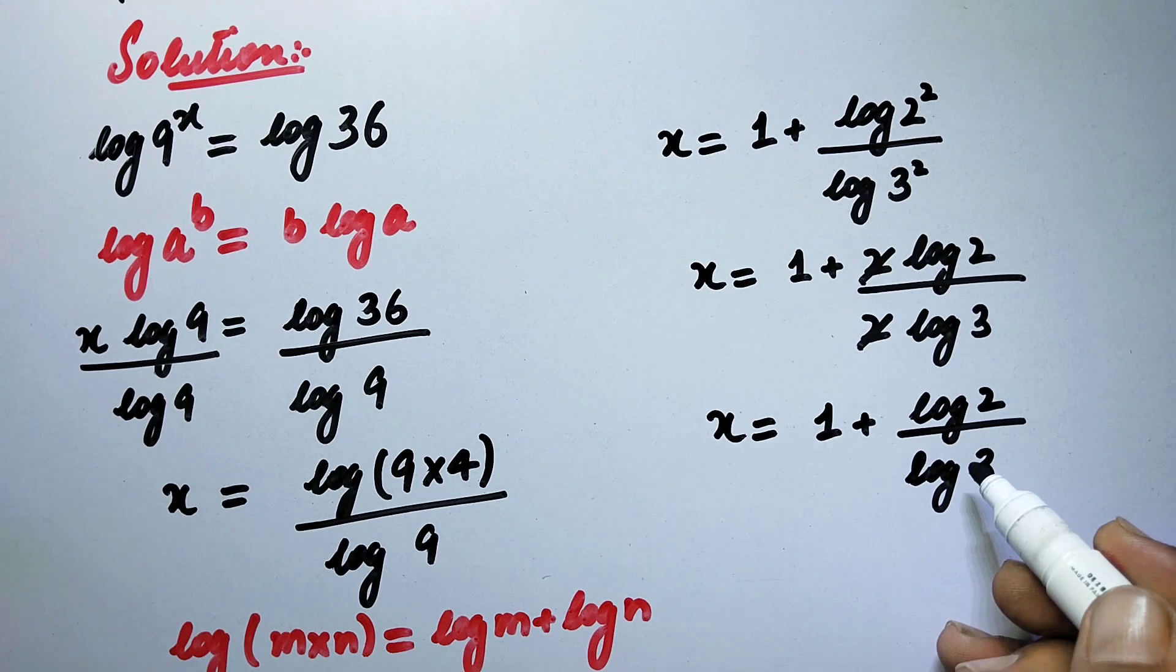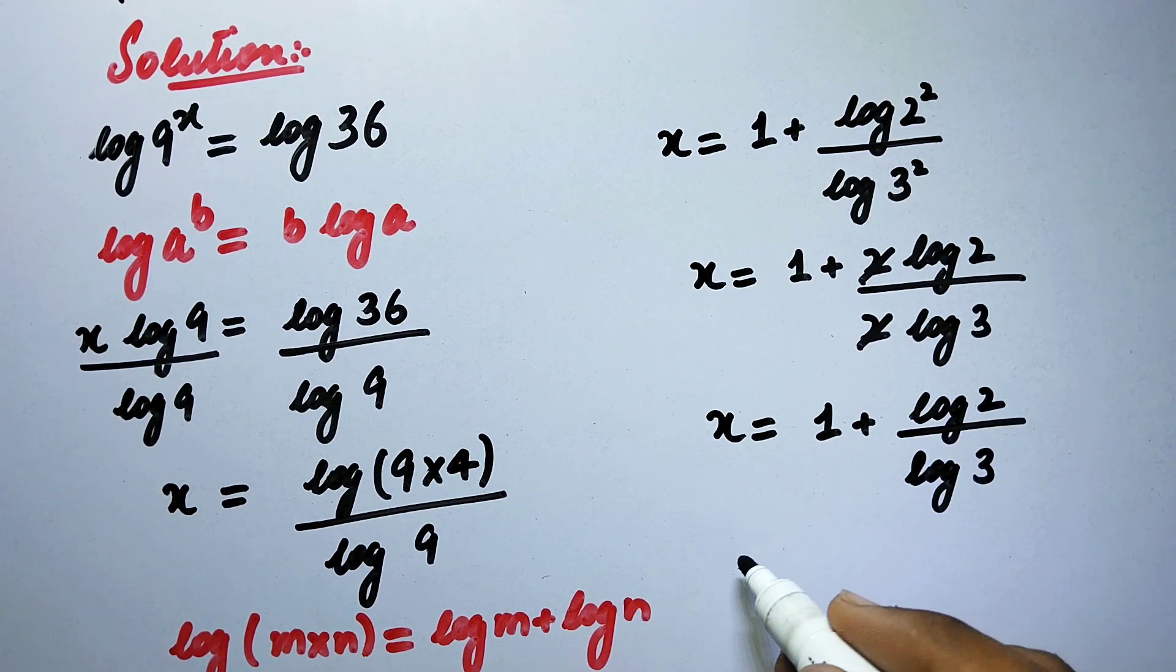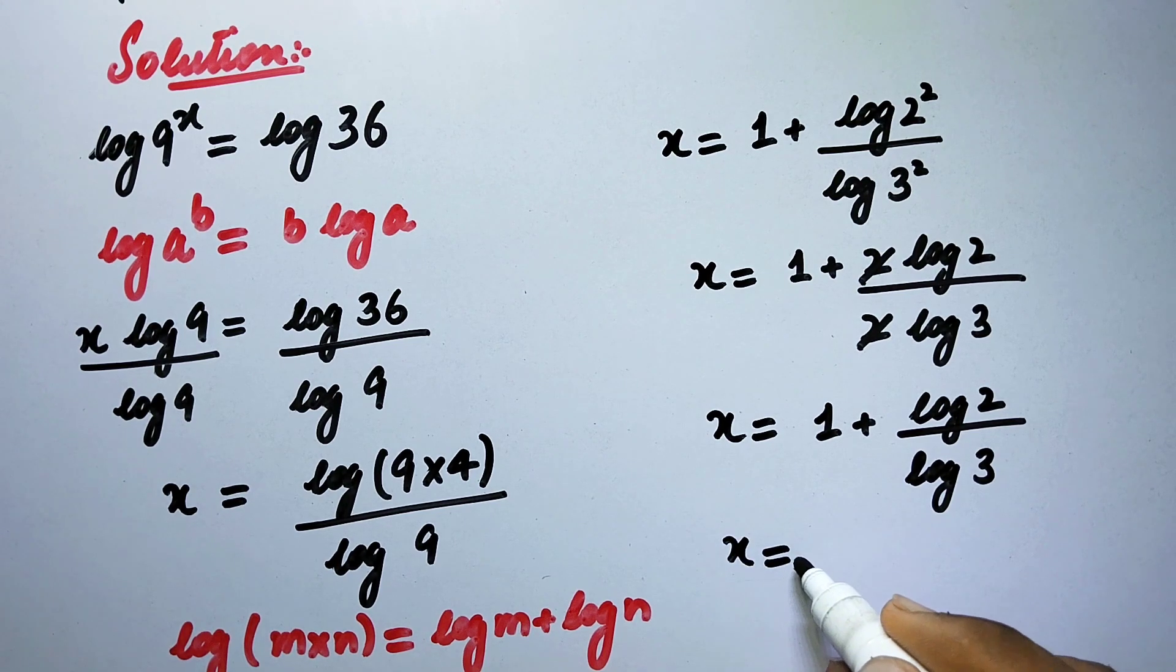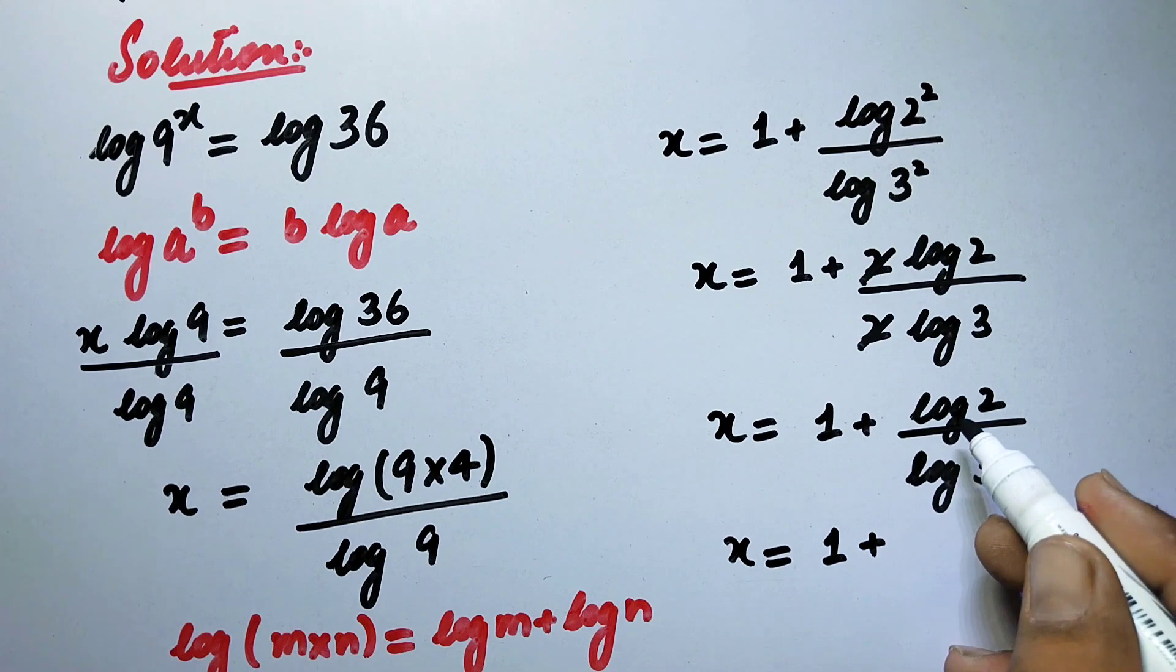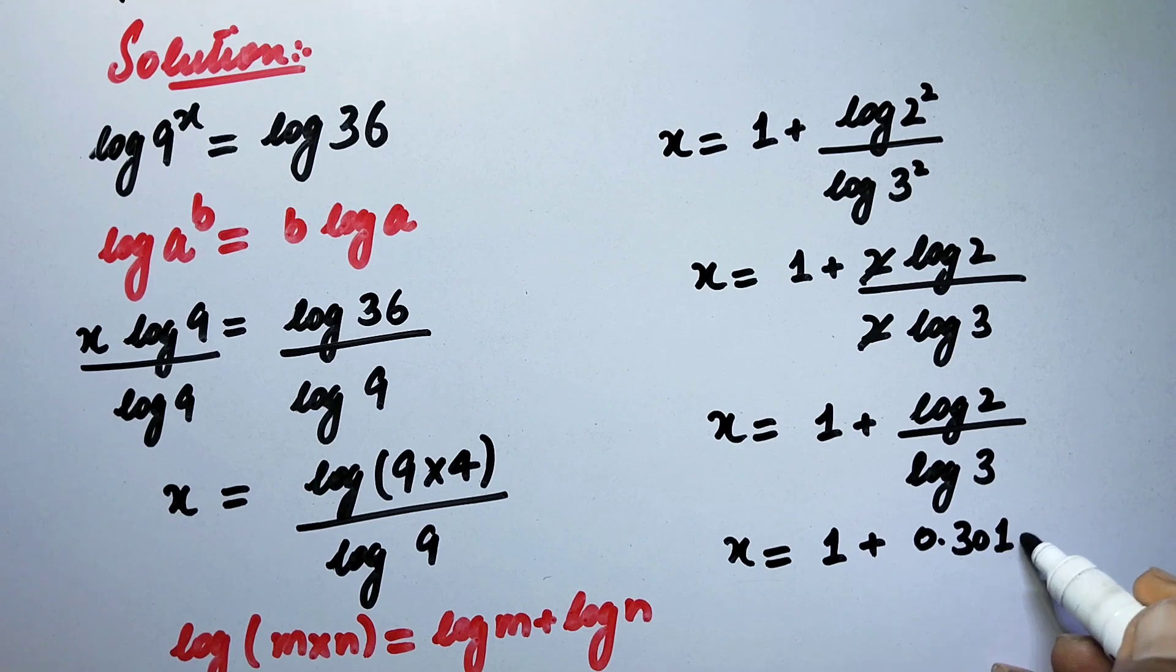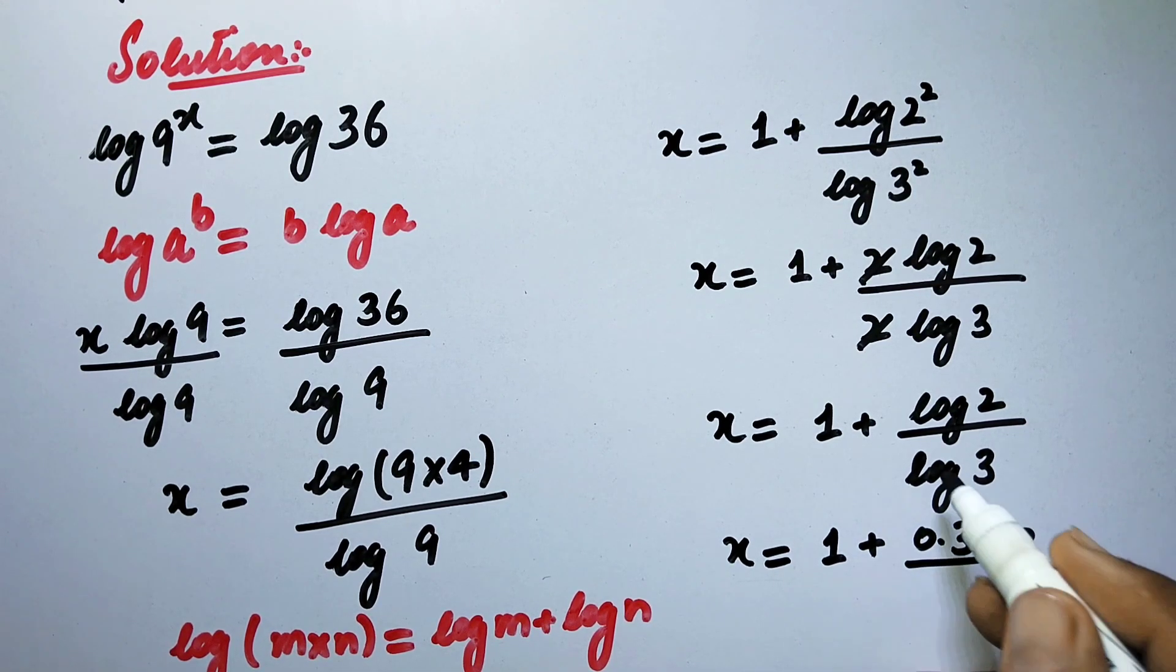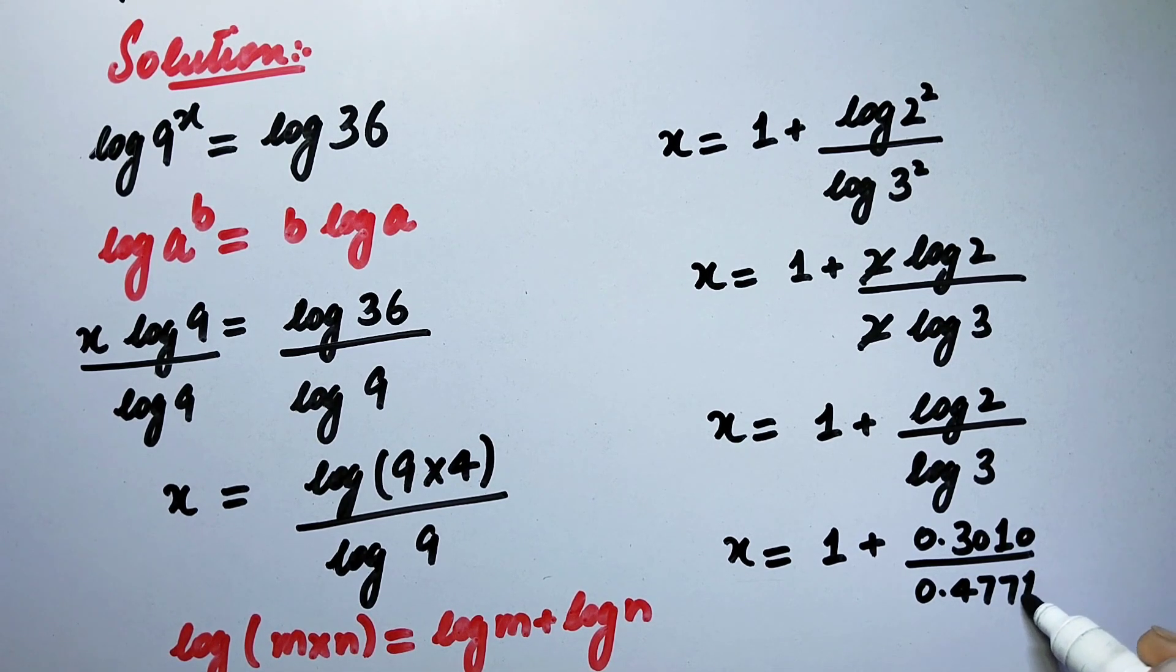Now here we will put the values of terms having log. So x equal to 1 plus, as the value of log of 2 is equal to 0.3010 and the value of log of 3 is equal to 0.4771.